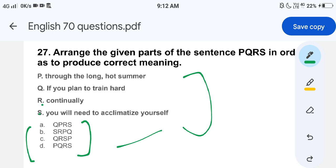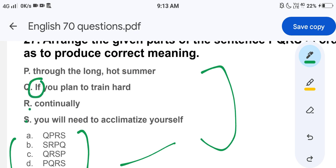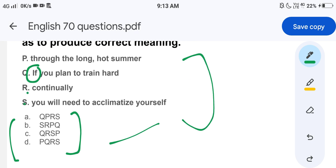First of all, a sentence always starts with a subject. And if there is no subject, then it starts with if. As can be seen in this case, here we have to see if, because here we don't have a subject. So basically, the sentence has to start with Q, right? So eliminate options A, B, and D which don't start with Q.